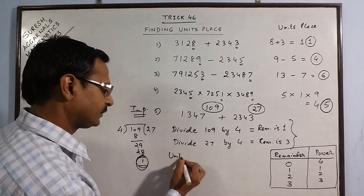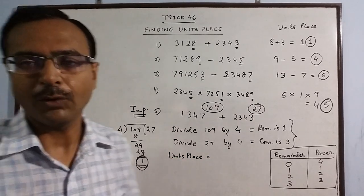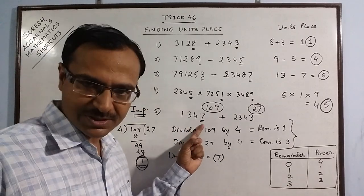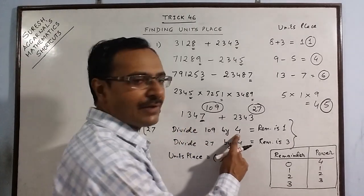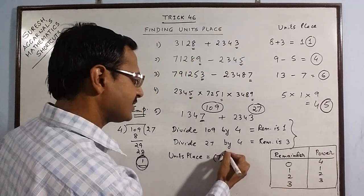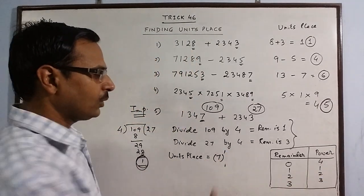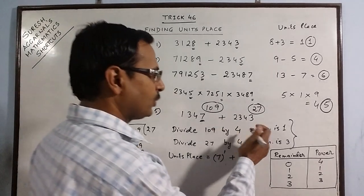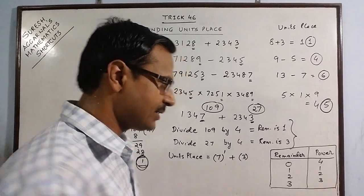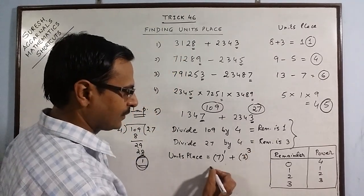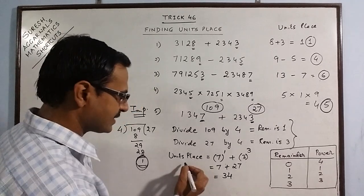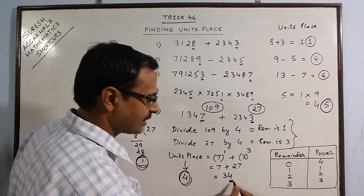The unit's place of the result is found as follows. Take the unit's place of the first number, which is 7, and since the remainder when 109 is divided by 4 is 1, the corresponding power is 1. So we raise 7 to the power 1. Then the unit's place of the second number is 3, and since 27 divided by 4 gives remainder 3, the power is 3. So we compute 7 raised to 1 plus 3 cubed, which is 7 plus 27 equals 34. The unit's place is 4. That is the required solution.